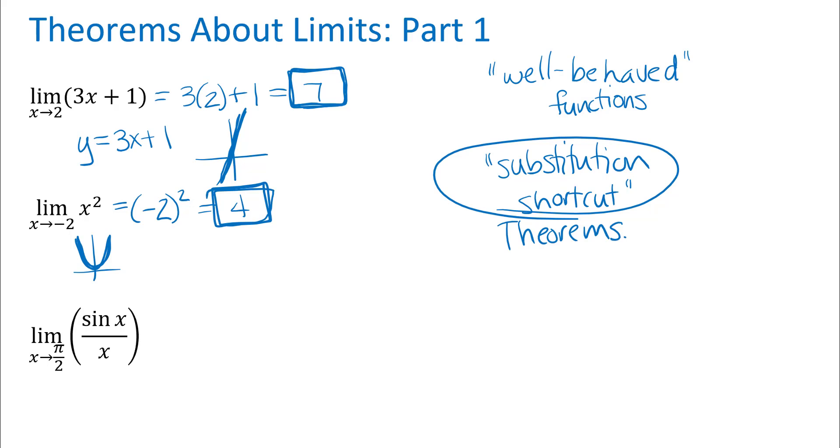Alright, this next one: this function sine of x over x does have some domain issues at x equals zero. I wouldn't be able to use this substitution shortcut if I were letting x approach zero. But the x value that it's asking me about here is not any place where this function does anything weird, so I can also use a substitution shortcut here. Sine of pi over two is one, so I have one over pi over two, or if I simplify that I'll get two over pi.